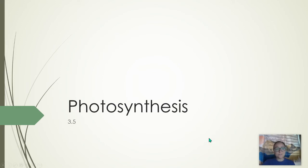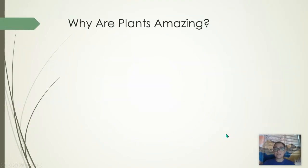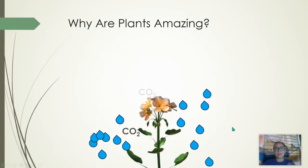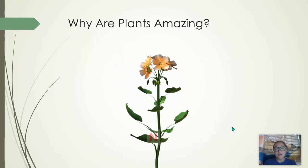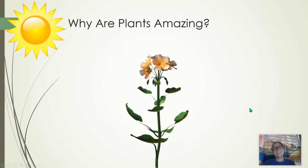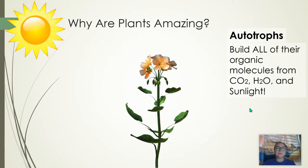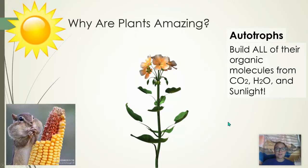Let's talk about the light reaction of photosynthesis. Before we can really talk about the light reaction, we need to understand why plants are amazing. Plants literally build themselves — all of their macromolecules: carbohydrates, lipids, proteins, and nucleic acids — from carbon dioxide, water, and nutrients from the soil, through the power of sunlight driving the light reaction of photosynthesis. These organisms are called autotrophs because they rebuild all of their own organic molecules.